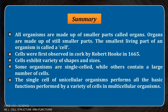All organisms are made up of smaller parts called organs, which are made up of still smaller parts. The smallest living part of an organism is called a cell. Cells were first observed in cork by Robert Hooke in 1665. Cells exhibit a variety of shapes and sizes. Some organisms are single-celled while others contain a large number of cells. The single cell of unicellular organisms performs all the basic functions performed by a variety of cells in multicellular organisms.